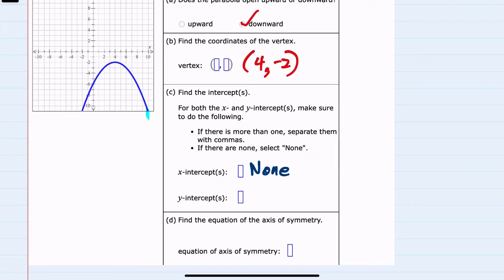Next we're asked about y-intercepts, and we can see that there is a crossing of the y-axis here at -6. So the y-intercept is -6.